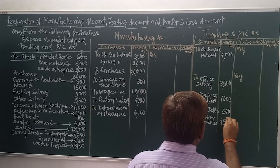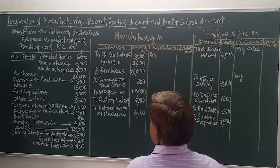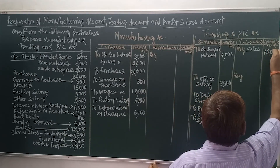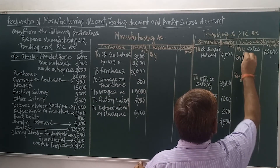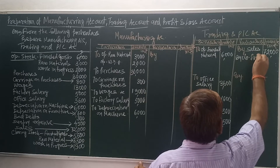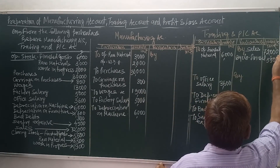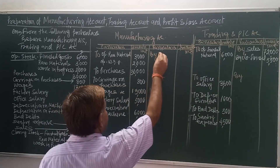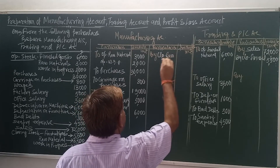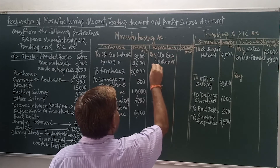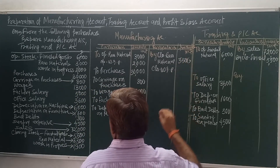Sundry expenses value: 45,000. Sales — this is a trading-related item, as sales happen after production — 72,000. Closing stock: closing finished goods relates to trading account — value 5,500. Closing raw material and closing work in progress relate to manufacturing account — their values are 3,500 and 1,900 respectively.